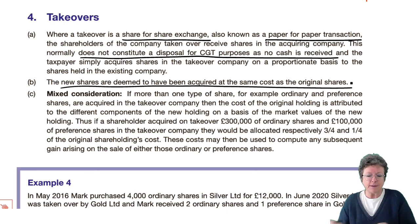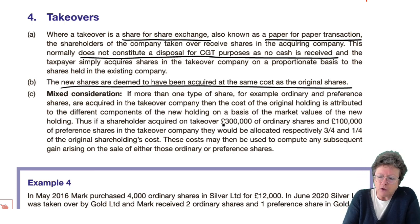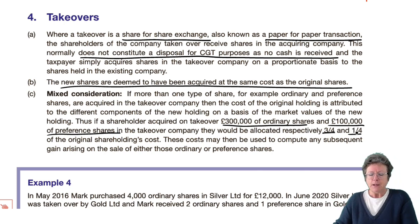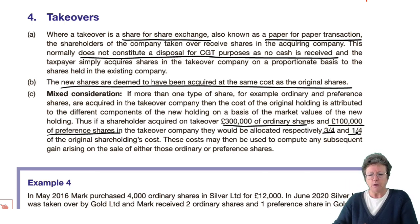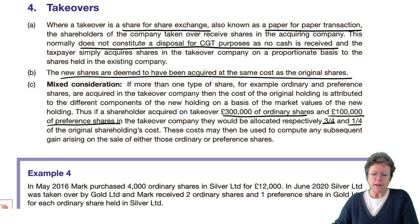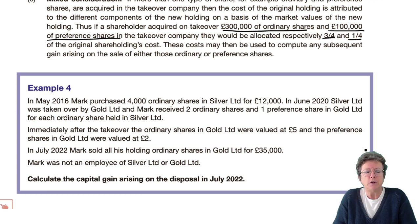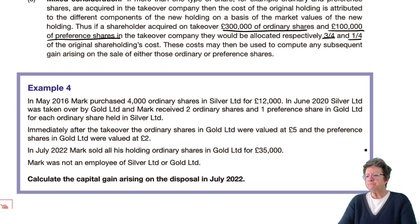It's fairly straightforward in some aspects. If you acquired 300,000 ordinary shares and 100,000 preference shares in the takeover, that's normally three quarters and one quarter. There is a sequence of steps I want to take you through so you can apply them to any takeover question you might have.